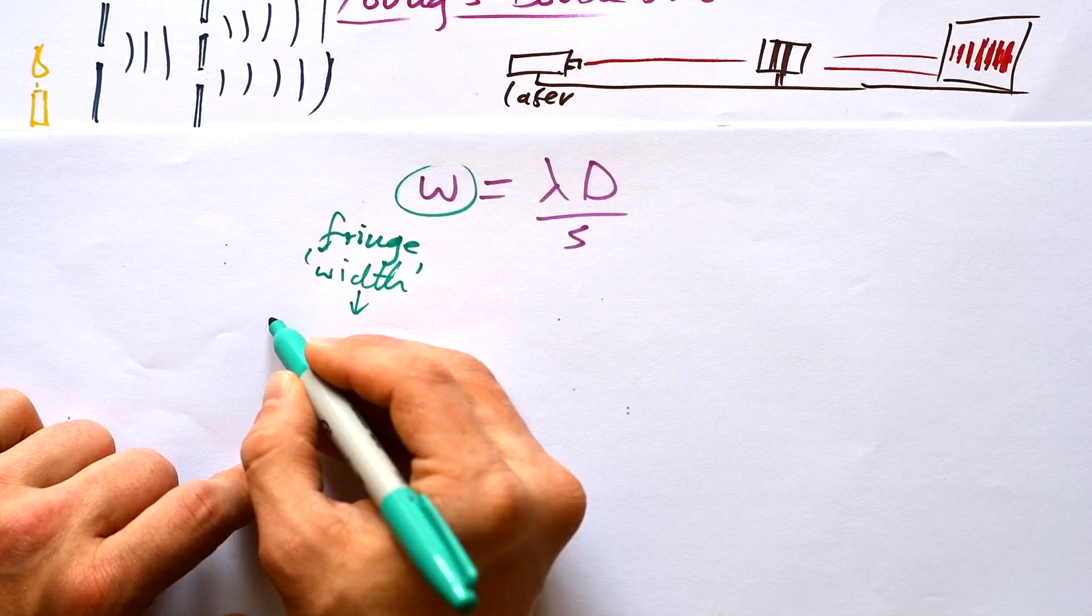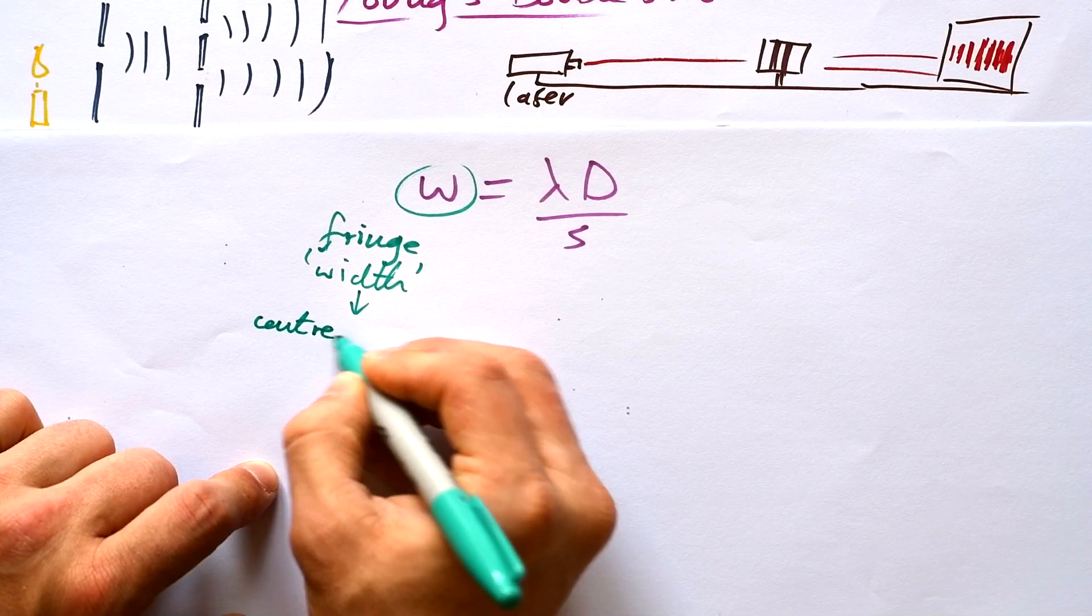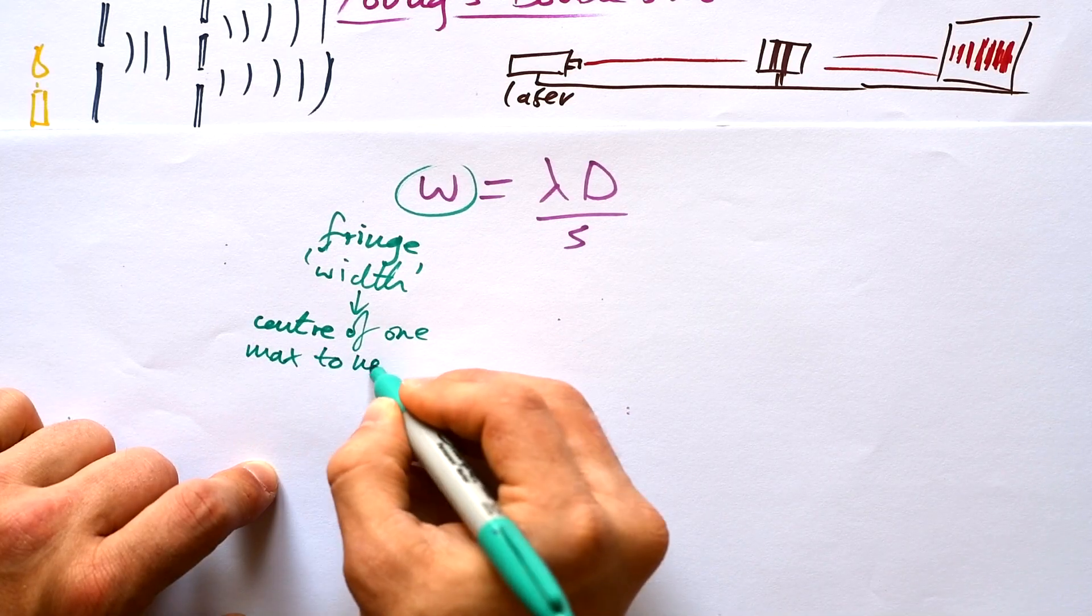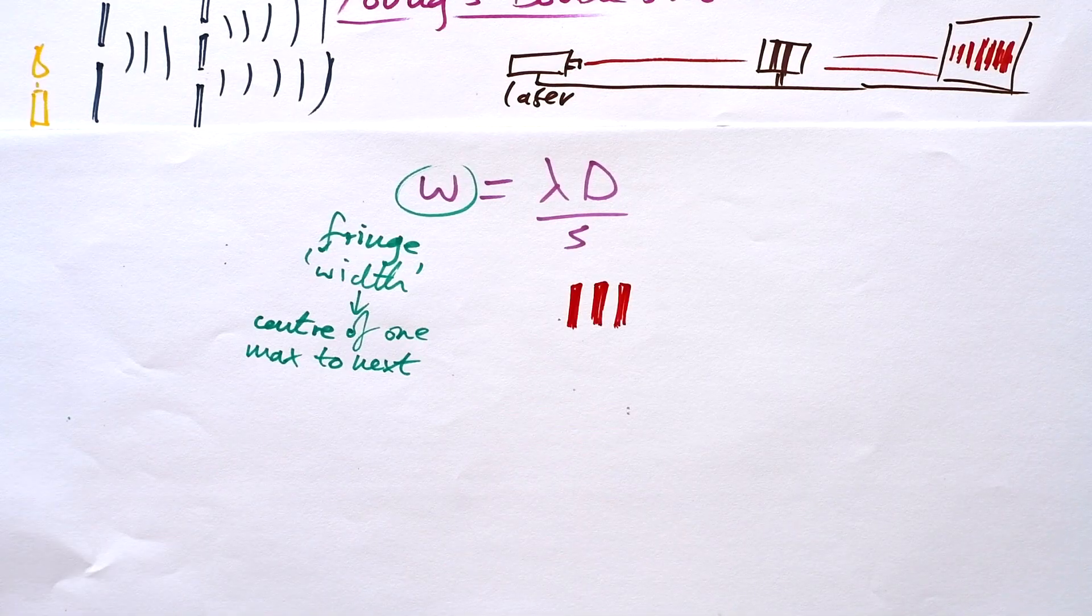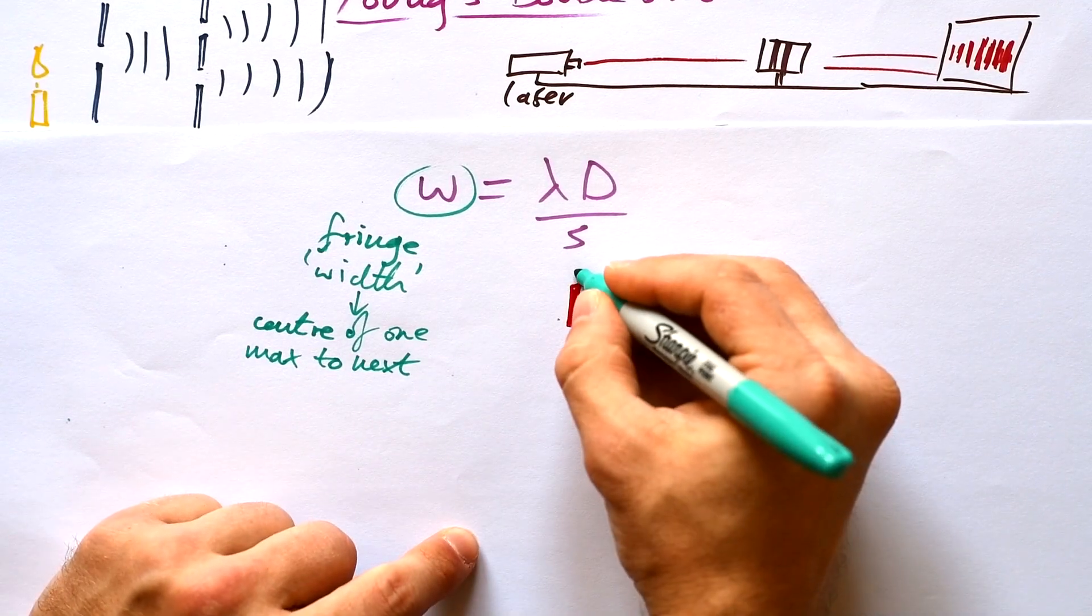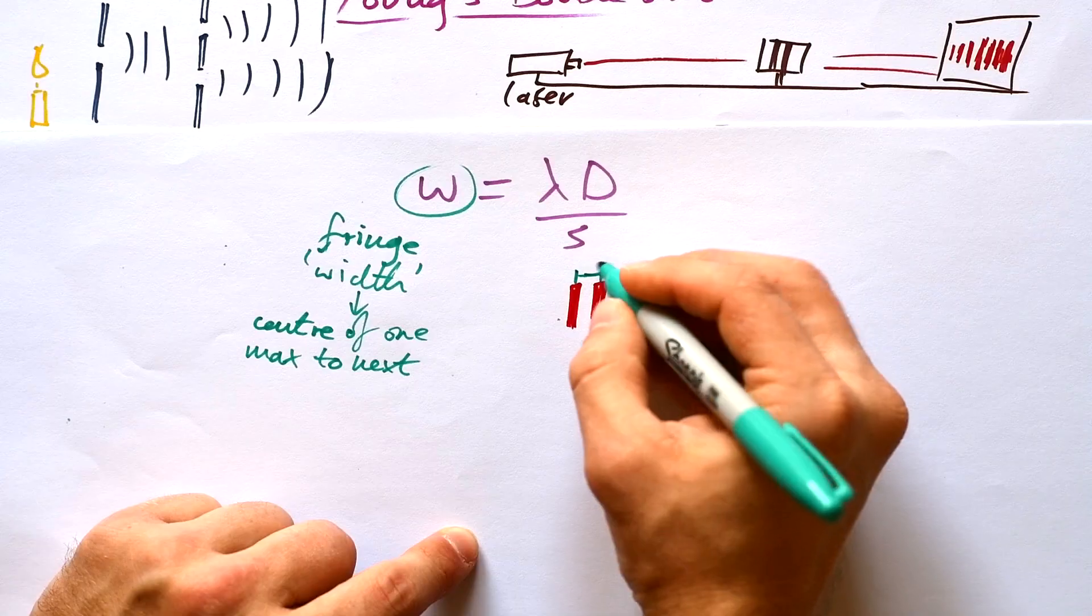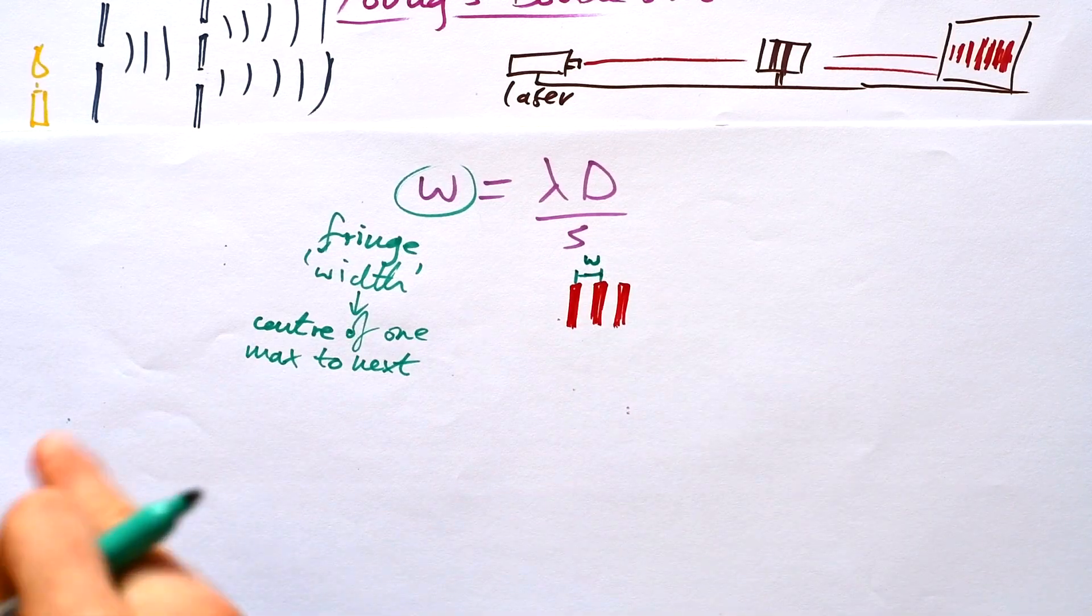What is that? It's the distance from center of one max that's a bright spot to the next one. So if that's our diffraction pattern there then it's going to be in between like that that's going to be our W the centers.